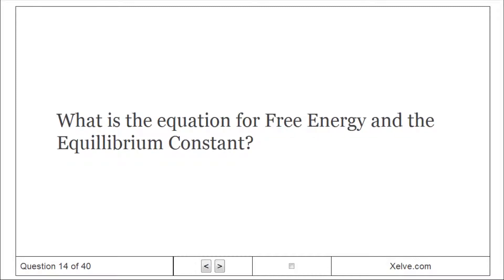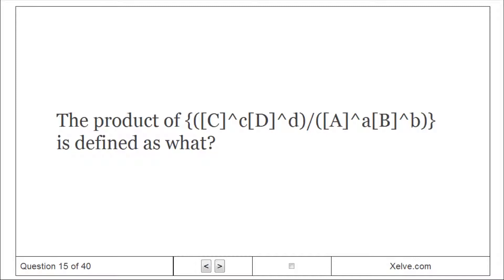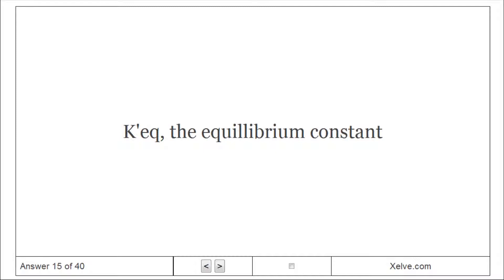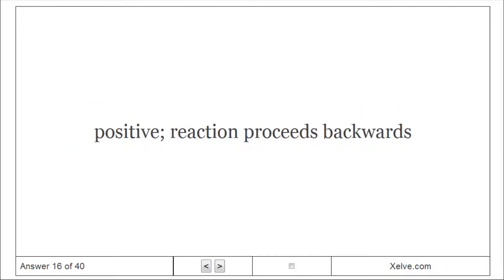What is the equation for free energy and the equilibrium constant? Delta G equals delta G-not plus RT ln(Q). The product of Q is defined as what? The equilibrium constant, Keq. When Keq is less than 1.0, then delta G-not is positive; the reaction proceeds backwards.